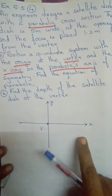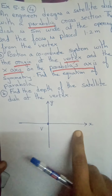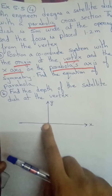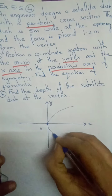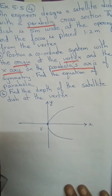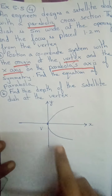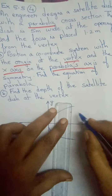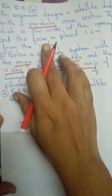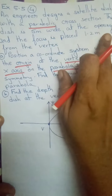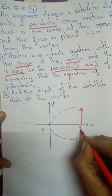The x-axis is the parabolic axis. I am taking a parabola which is opening rightwards — that is the standard form. So the x-axis is the parabolic axis. This is the parabolic dish and this is the opening. The opening has a width of 5 meters, so this width is 5 meters.